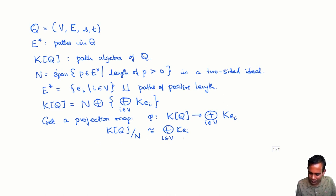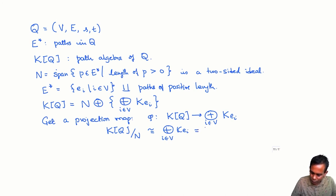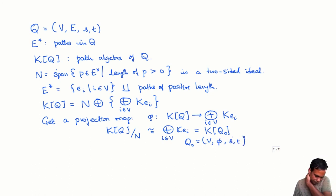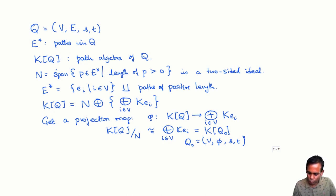This turns out to be a ring isomorphism. On the right-hand side, the ring structure is as if we had a quiver with no edges at all — this is the path algebra of the quiver Q₀, which has the same vertex set as Q but the empty edge set. So KQ mod N is isomorphic to KQ₀, the path algebra of the quiver with no edges.